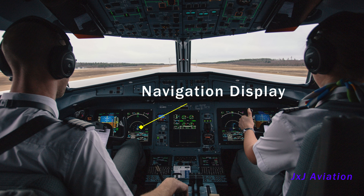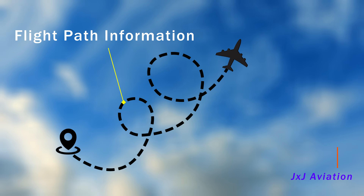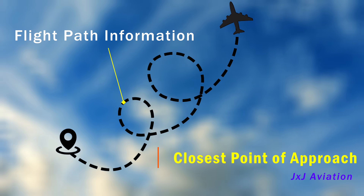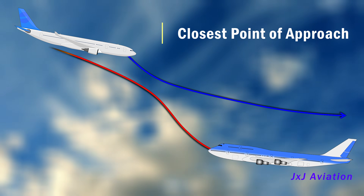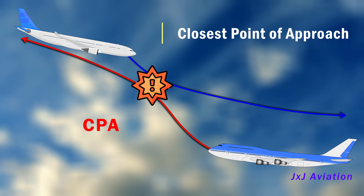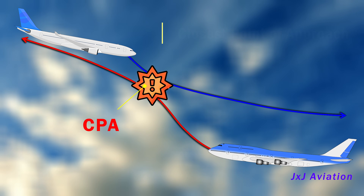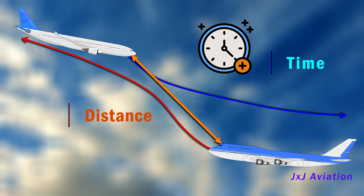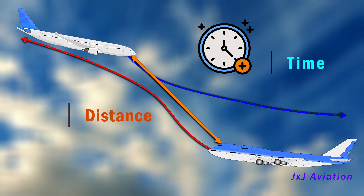The system also uses the flight path information from nearby aircraft to compute Closest Point of Approach, or CPA. The closest point of approach is the minimum distance two aircraft will reach if they continue on their current flight path. Based on the other aircraft's distance or the time to the closest point of approach, the TCAS provides indications in the cockpit to prevent a mid-air collision.